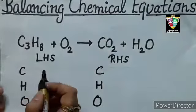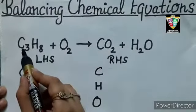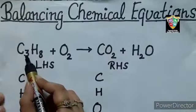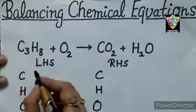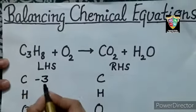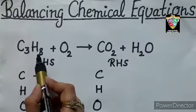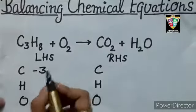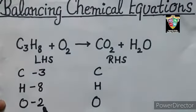Now count the number of atoms of each. How many atoms are there for carbon? See 3. That means 3 carbon atoms are there. So write 3. Then you have 8 hydrogen atoms and 2 oxygen atoms on LHS. So write down 8 hydrogen atoms and 2 oxygen atoms.